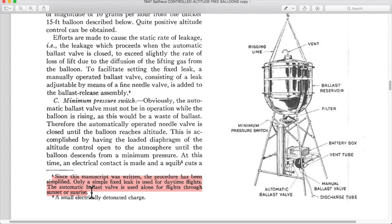There's a footnote. So things have been simplified since this paper was written. Only a fixed simple leak is used for daytime flights. During the day when the sun is out, your balloon is not going to sink. So they just let this drip along and it keeps the balloon at its maximum altitude. I've actually done that for an amateur flight before by just poking a tiny little hole in a bottle and hanging it on a balloon, filling it with alcohol. Let's see, the automatic ballast valve is used alone for flights through sunset or sunrise.